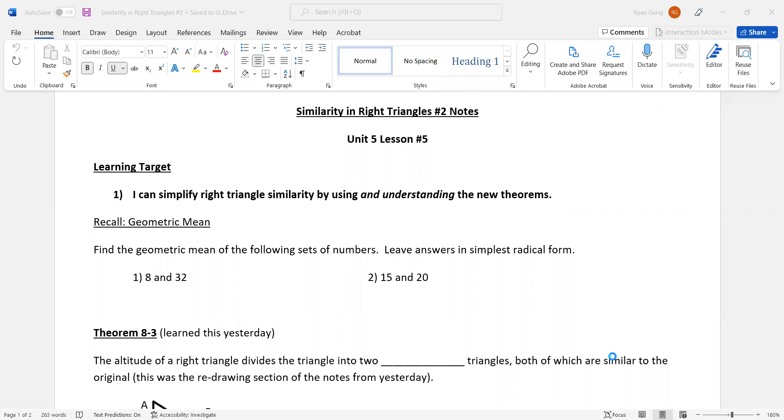So geometric mean, we talked about in lesson four. Recall real quick what it means. It's the average when you multiply, and you can do this by setting up a proportion. So find the geometric mean of 8 and 32. Remember, the geometric mean goes top right, bottom left. Then you just cross multiply. X squared equals 8 times 32, which is 256. Square root, you get X equals plus or minus 16.